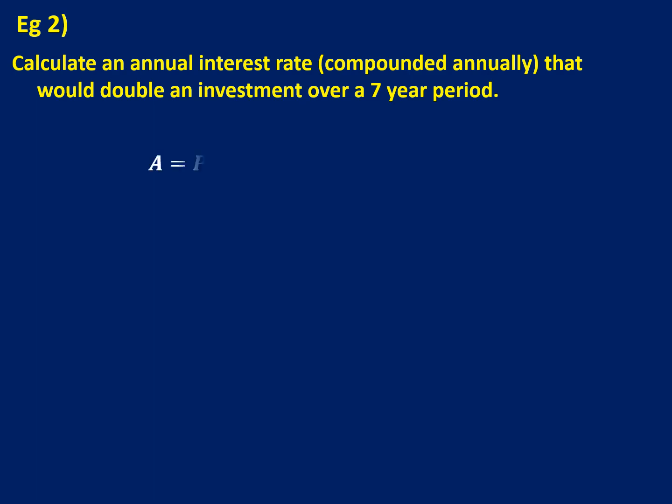We want to use the compound interest formula because the interest is being compounded annually. The investment doubles over a seven-year period, so if we put 1 Rand in, 2 comes out, and our exponent should be 7. The 1 in front of the bracket doesn't change the calculation at all, so we can ignore it. The first thing we need to get rid of is the exponent of 7. To get rid of an exponent, we use the same root on the other side — so we find the seventh root of 2. Be careful on your calculator: don't go 7 times root 2; you have to choose the seventh root function.